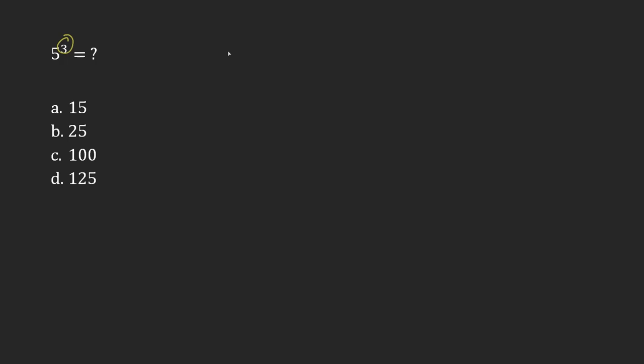that 3 just means how many times you're going to multiply the number that comes before it by itself. So 5 is being multiplied 3 times here, 5 times 5 times 5.